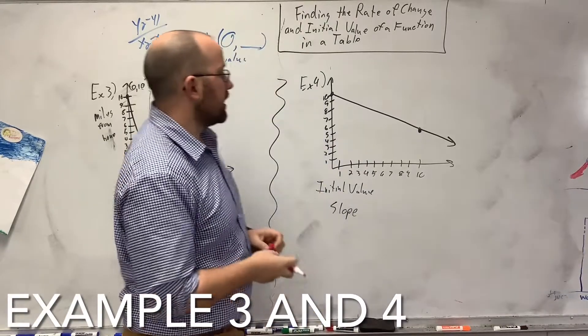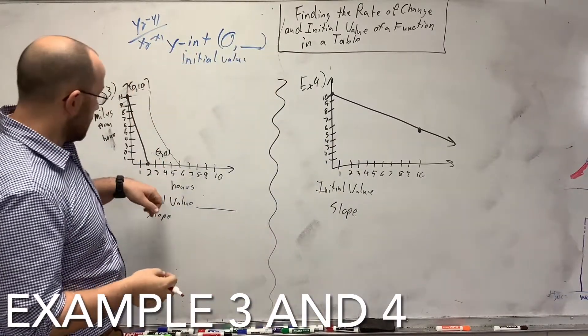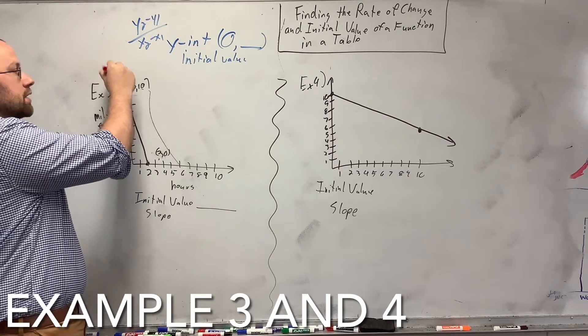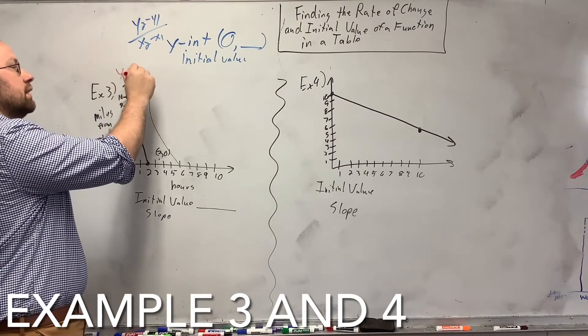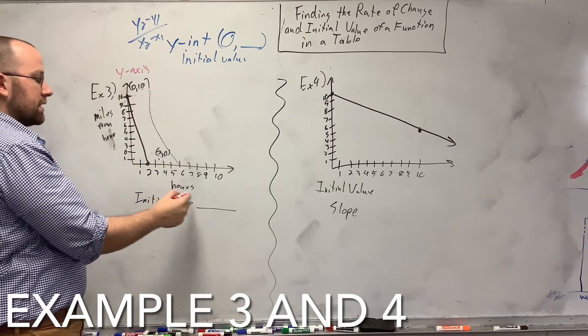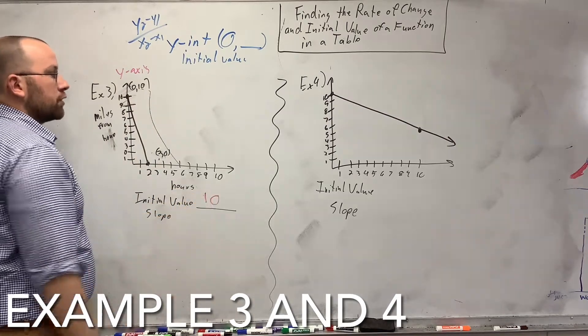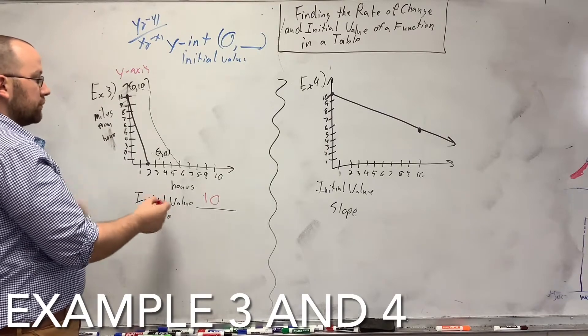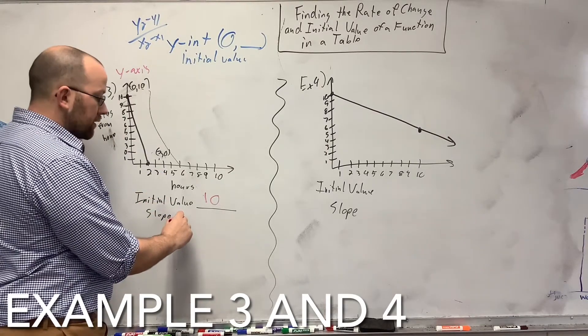And two more finding it from a graph. My initial value is where this line right here crosses the y-axis. It crosses the y-axis at 0, 10. So, my initial value is 10. Now, I need to find my slope. Now that I'm from a graph, I can do rise over run.